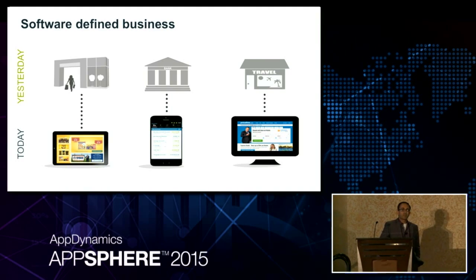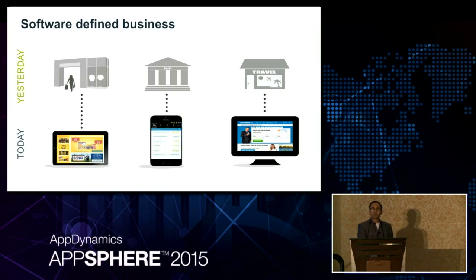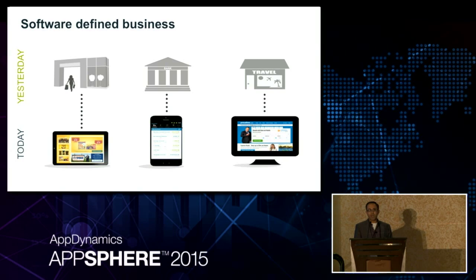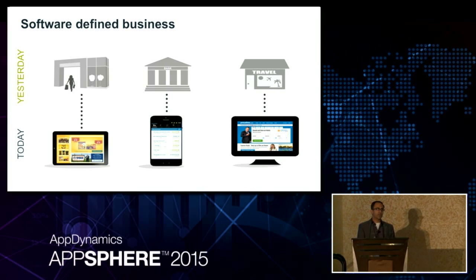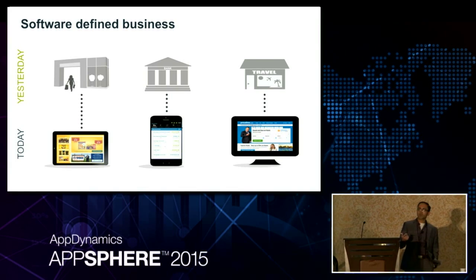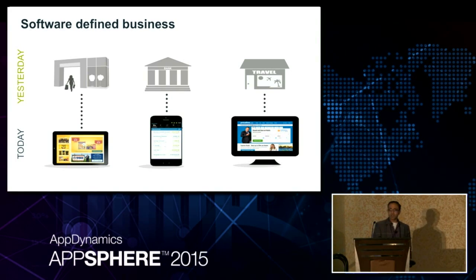You've heard a lot about software-defined businesses and how software is helping everyone through digital transformation. Traditional retail malls are no longer the same. Banks are no longer doing the same thing. The travel industry has changed. Think about Ubers and Facebooks of the world — Uber is the largest taxi company and doesn't own a taxi. Facebook has the largest amount of content but isn't the New York Times. Software is changing businesses and is the main driver behind digital transformation.